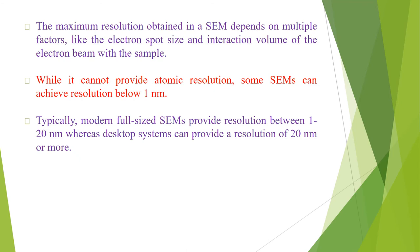The maximum resolution obtained in a scanning electron microscope depends on multiple factors, like the electron spot size and the interaction volume of the electron beam with the sample. While it cannot provide atomic resolution, some scanning electron microscopes can achieve resolution below 1 nanometer. Typically, modern full-sized scanning electron microscopes provide resolution between 1 to 20 nanometers, whereas desktop systems can provide a resolution of 20 nanometers or more.